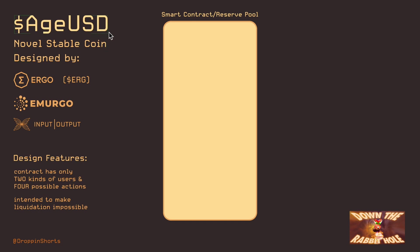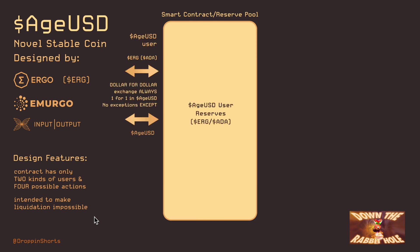The scuttlebutt is that this is how stablecoins will also function on Cardano if AgeUSD is successful. This new design features simplicity — not like a programming language, just simple in reality — because there are only two kinds of users and four possible actions. You've got one user who can go in and out, and another who can go in and out, and this style is intended to make liquidation events impossible.